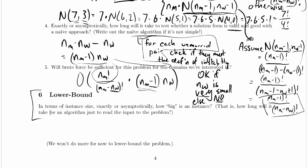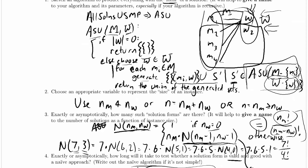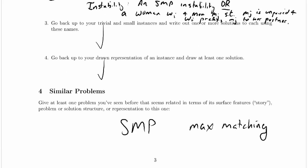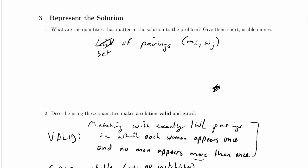So in terms of instance size, exactly or asymptotically, how big is an instance? Let's see now. What is an instance? Let's run back up again. I think we wrote that out, didn't we? There's a solution.